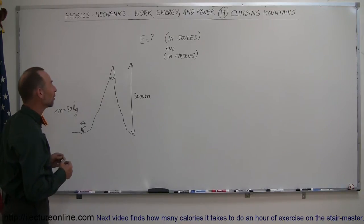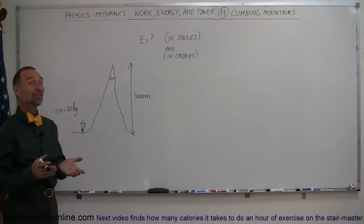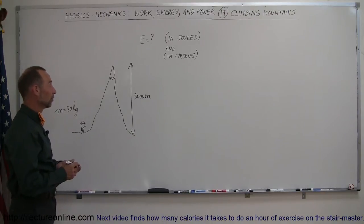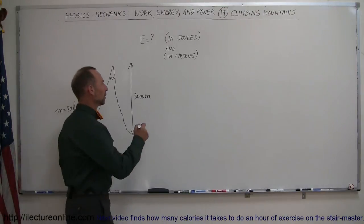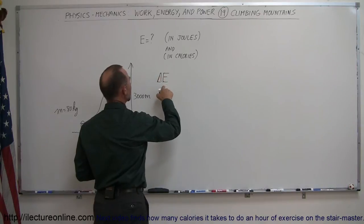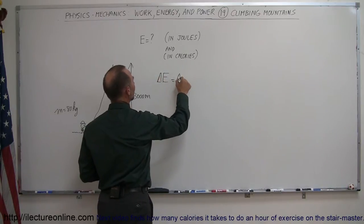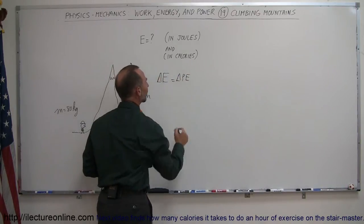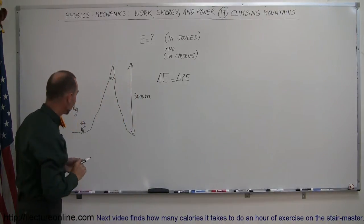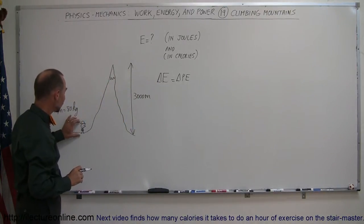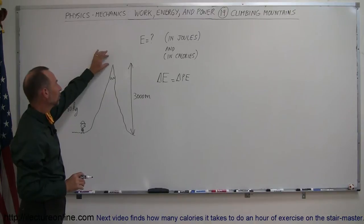But let's see how good a shape this person is in, and how much energy that would take to do so. So the energy required, let's call it delta E, would be of course the potential energy the hiker has to gain. Because the hiker has to take his weight and the backpack's weight from this height all the way to the top of the mountain.